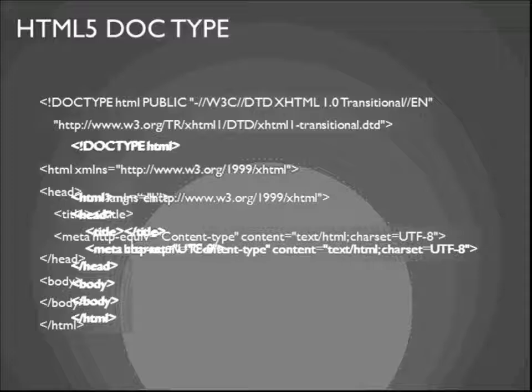This is pretty much what an HTML5 web page looks like. One more addition worth making is adding the language attribute — in this case, English (EN) — so screen readers and SEO can understand what is on the page. It's a pretty simple thing. Let me show you a quick example and then we'll get into the demo.